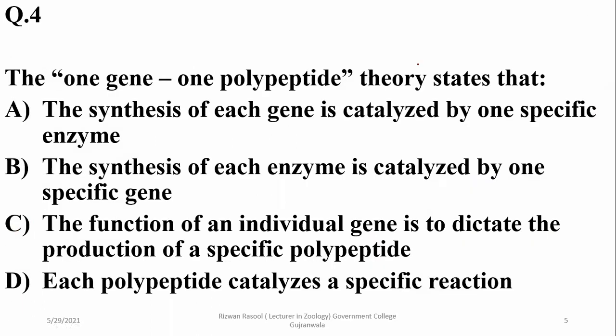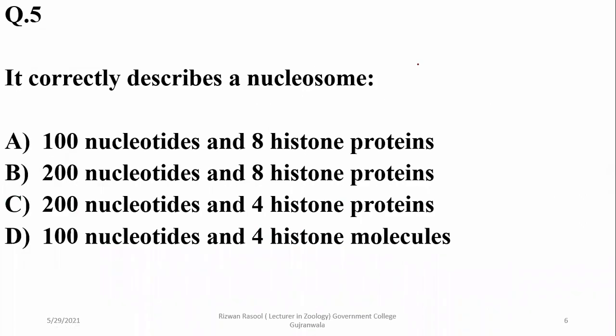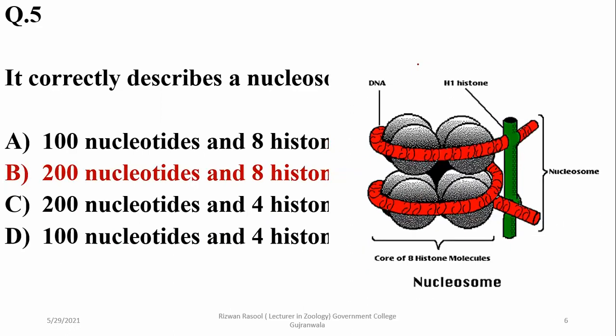The one gene-one polypeptide theory states that an individual gene is responsible for the production of a specific polypeptide chain. Regarding what correctly describes a nucleosome: a nucleosome consists of 200 nucleotides and an octamer of eight histone proteins, as you can see in the diagram.